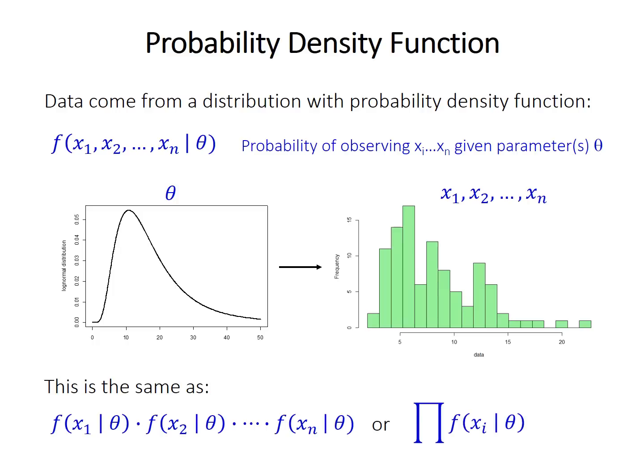So given the way that conditional probabilities work, we can also treat this as the probability of observing x1 given the parameters, multiplied by the probability of observing x2 conditional upon those parameters, and so forth. So in other words, we get the product, that capital pi symbol, of the probability of observing each data point given the parameters.